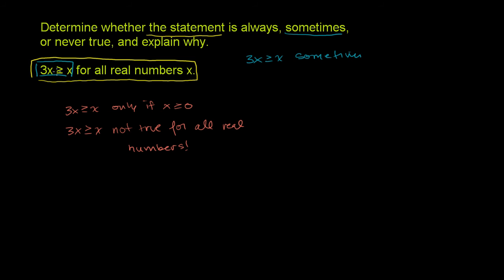But this whole thing, 3x is greater than or equal to x for all real numbers, is not sometimes true and sometimes not true. This is never true. You can never say it's for all real numbers. It's not like this is true on Monday and then on Tuesday this becomes not true and then on Wednesday it becomes true.